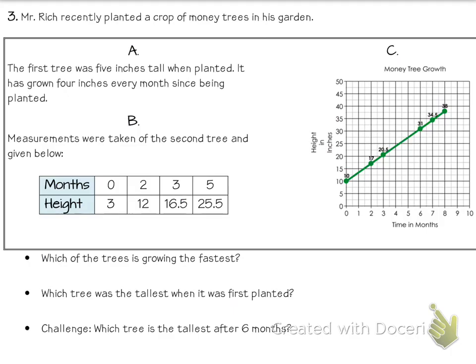All right, let's get this last problem started. I'm going to have you guys work on it in groups in class. So there are three trees here. Mr. Rich planted a crop of money trees in his garden. I would love to have money trees, but of course my name is not Mr. Rich. Maybe that's why. So tree A, tree B, and tree C are the three trees. Make sure you notice tree A just because it doesn't have a table or a graph, it is still one of the options. And the first question is, which of the trees is growing the fastest? Well, fastest speed, that's rate of change. So I need to find the rate of change for each of these. I'll do that for the word problem here. He says the first tree was five inches tall when he planted it, and it has grown four inches every month since being planted. Four inches every month means four inches per month. That is the rate of change, four inches per month. So A is growing at four inches each month.